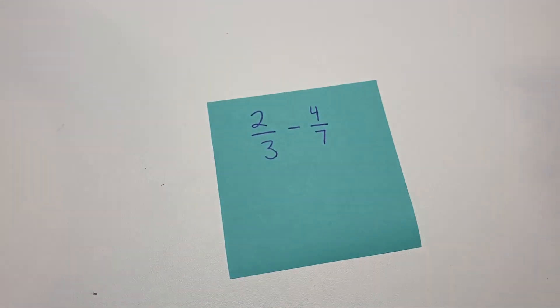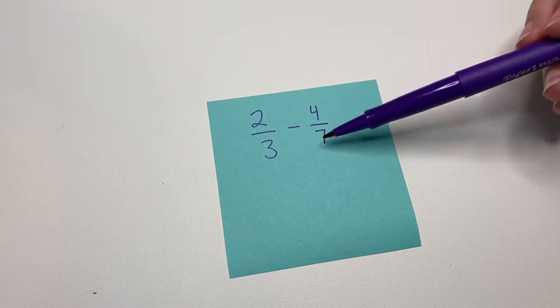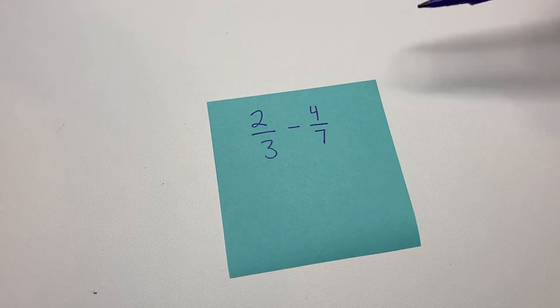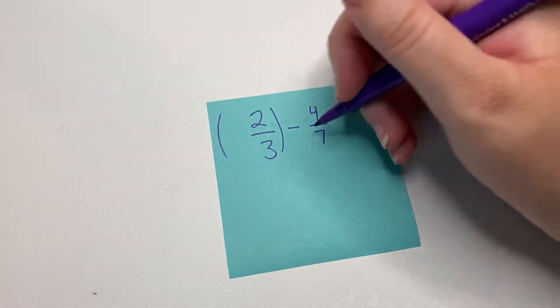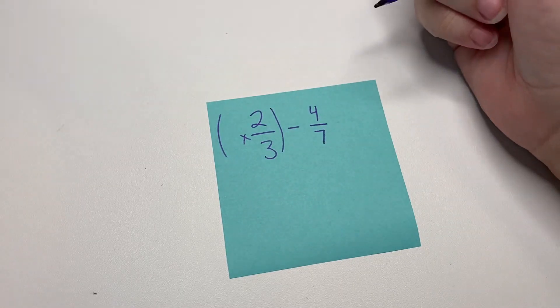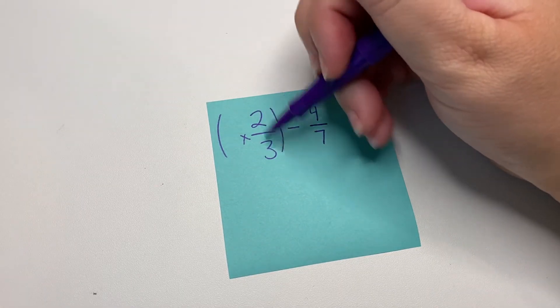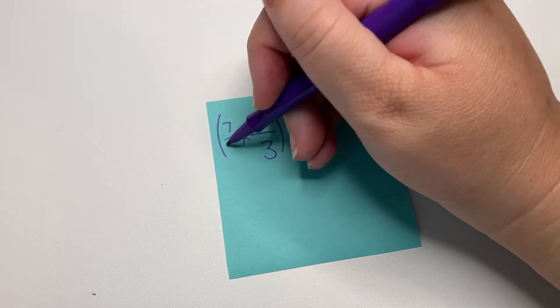So I want you to look at this next one and check for factors. Three doesn't go into seven. Seven doesn't go into three. So to find a common denominator, we can always change up our fractions by multiplying by one. In this case, we want to multiply by this seven over seven.